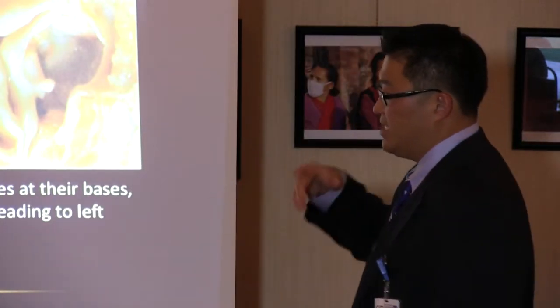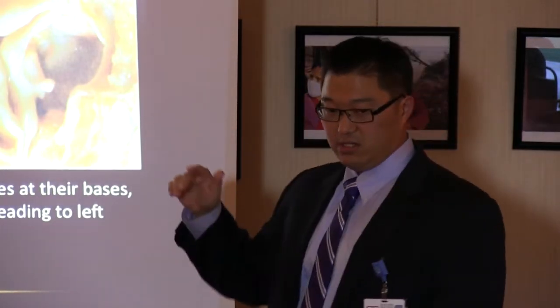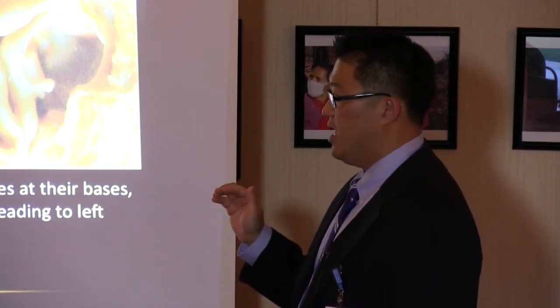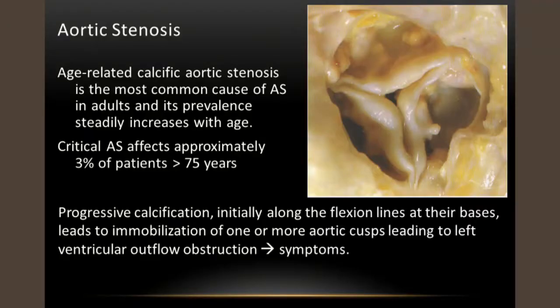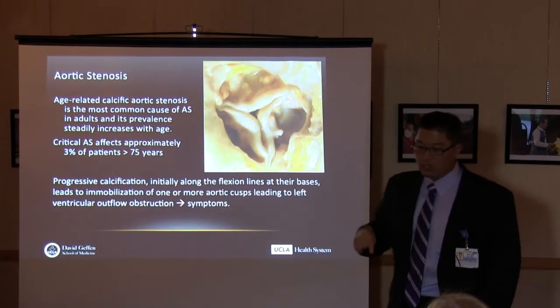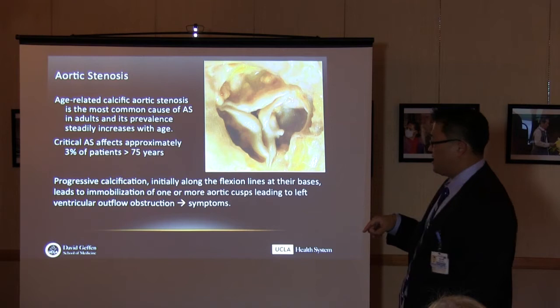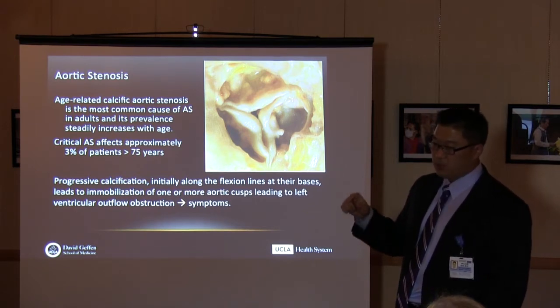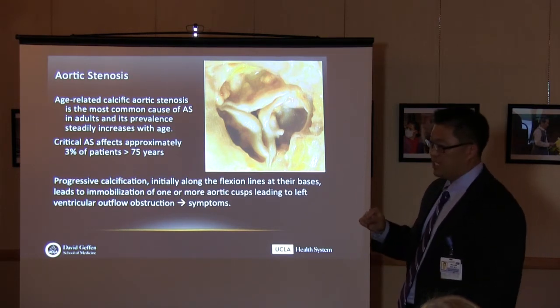About 3% of patients over the age of 75 have critical aortic stenosis. It starts as progressive calcification initially along the flexion lines at the bases, which leads to immobilization of one or more aortic cusps. That leads to left ventricular outflow obstruction, and that obstruction is what leads to symptoms.